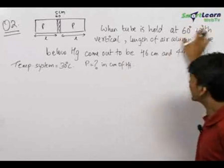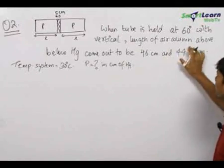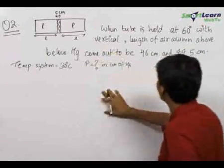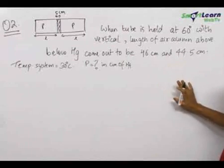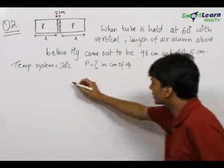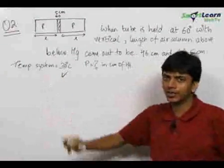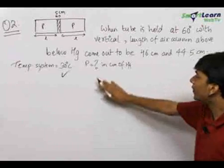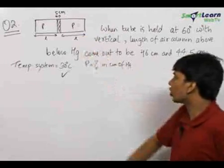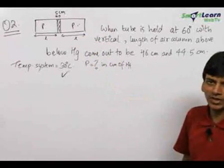Now when the tube is held at 60 degrees with the vertical, the length of air column above the Hg is given to be 46 centimeters and that below is given to be 44.5 centimeters. The temperature of the system is constant and is given to be 30 degree Celsius. We need to find out the initial pressure in this column in centimeters of Hg.